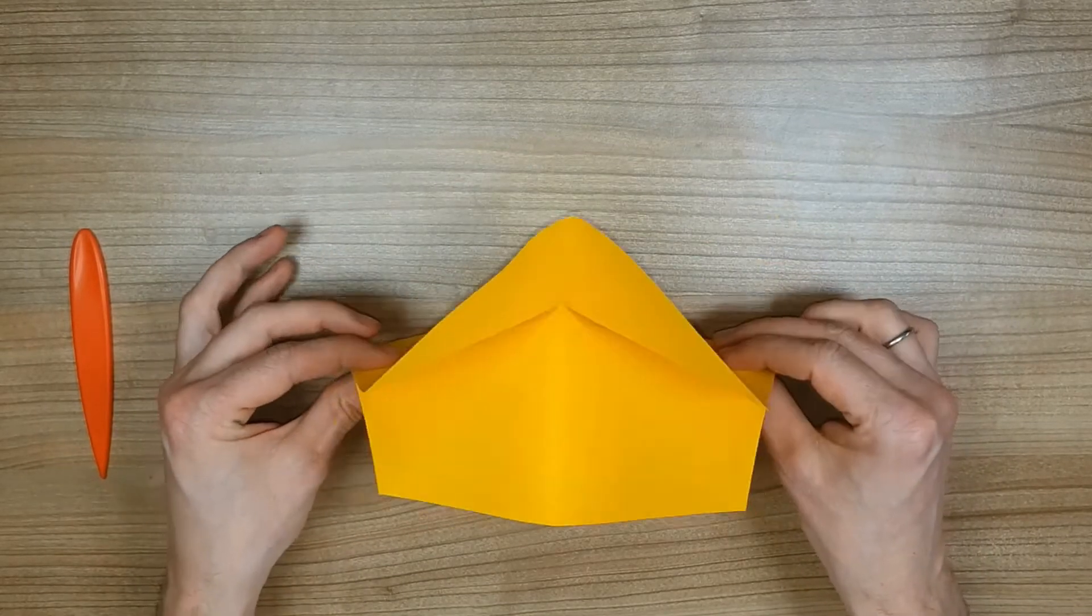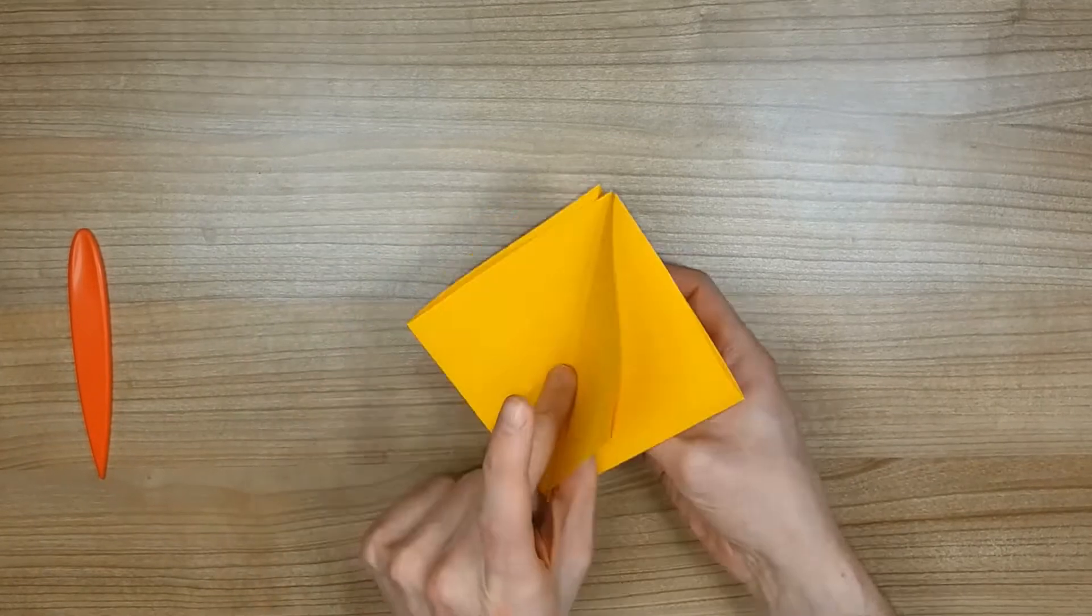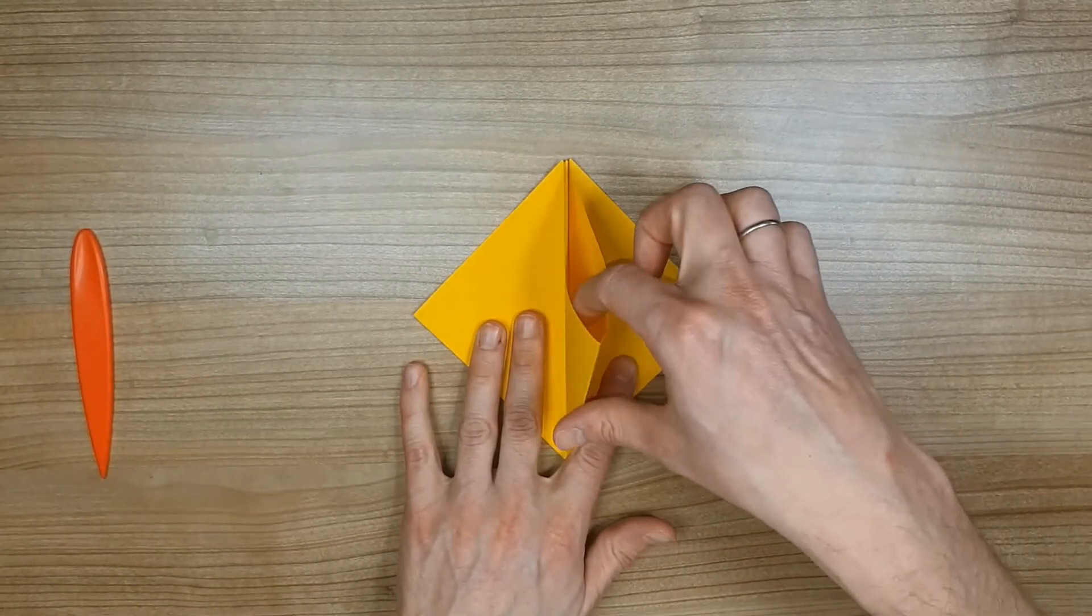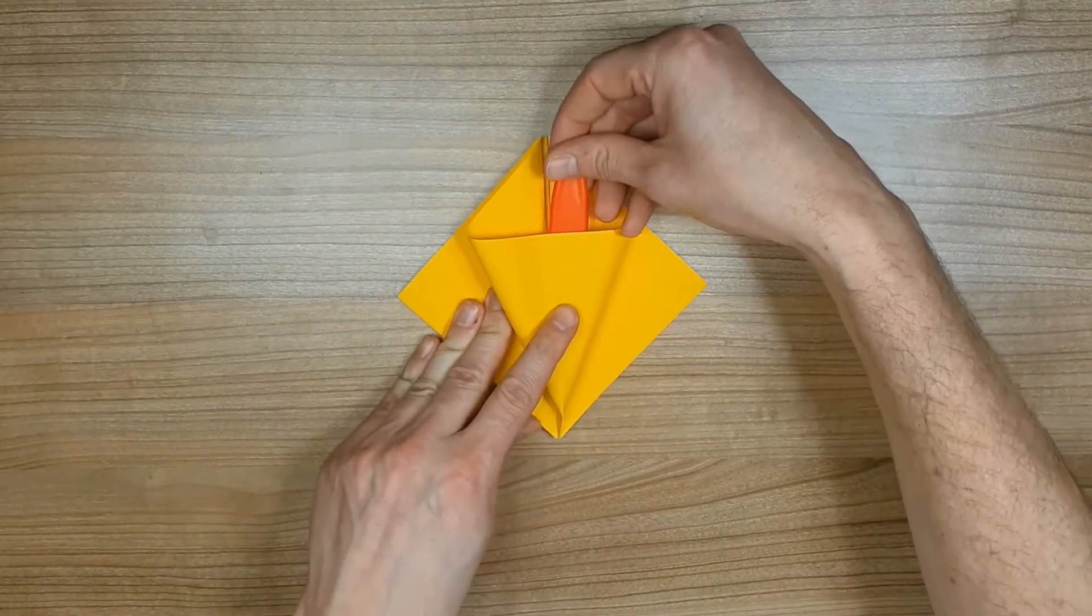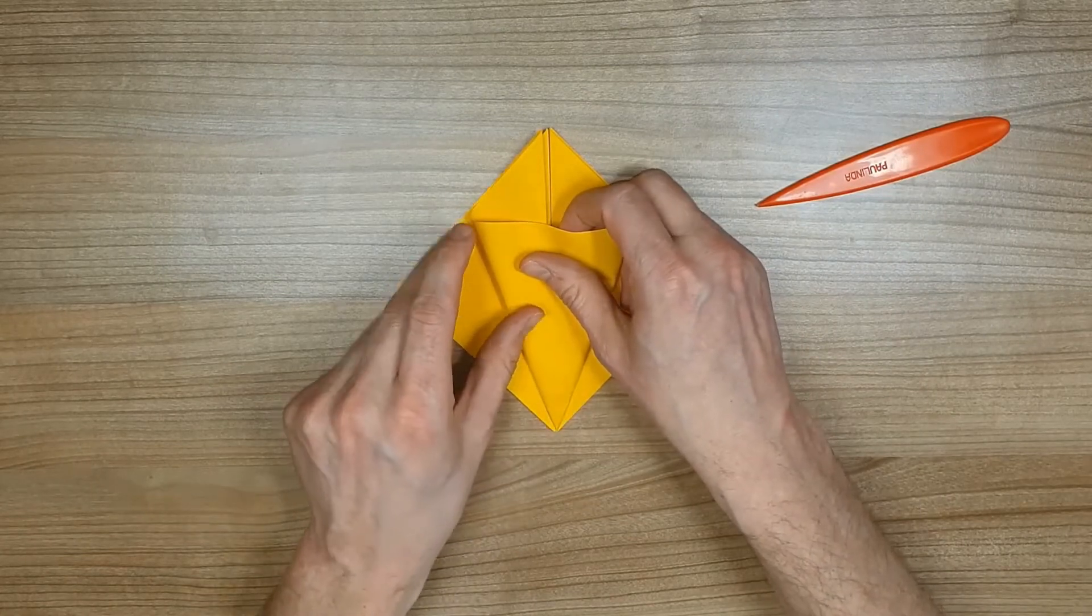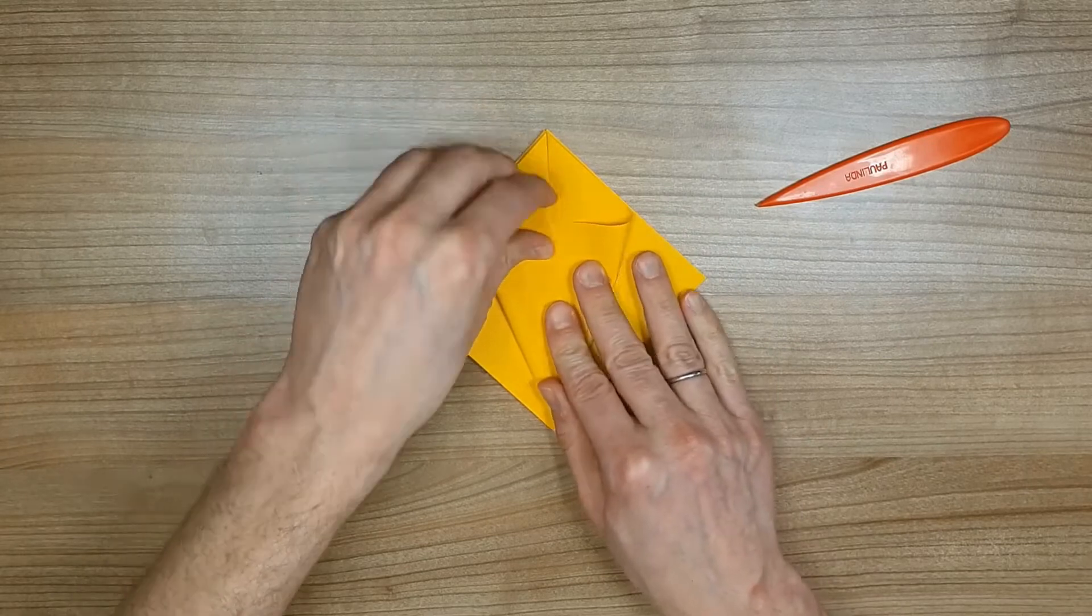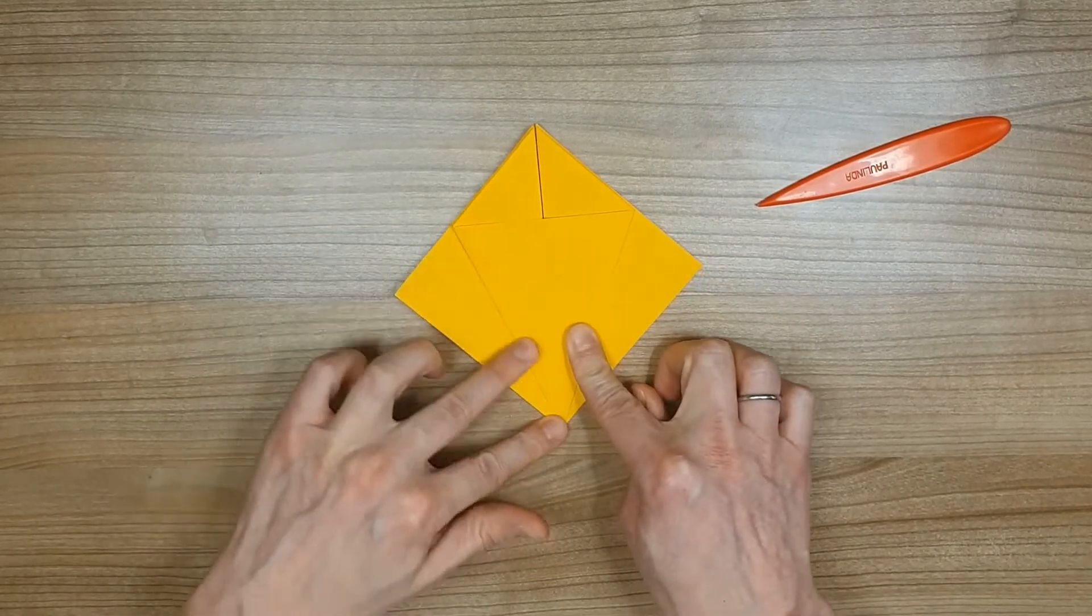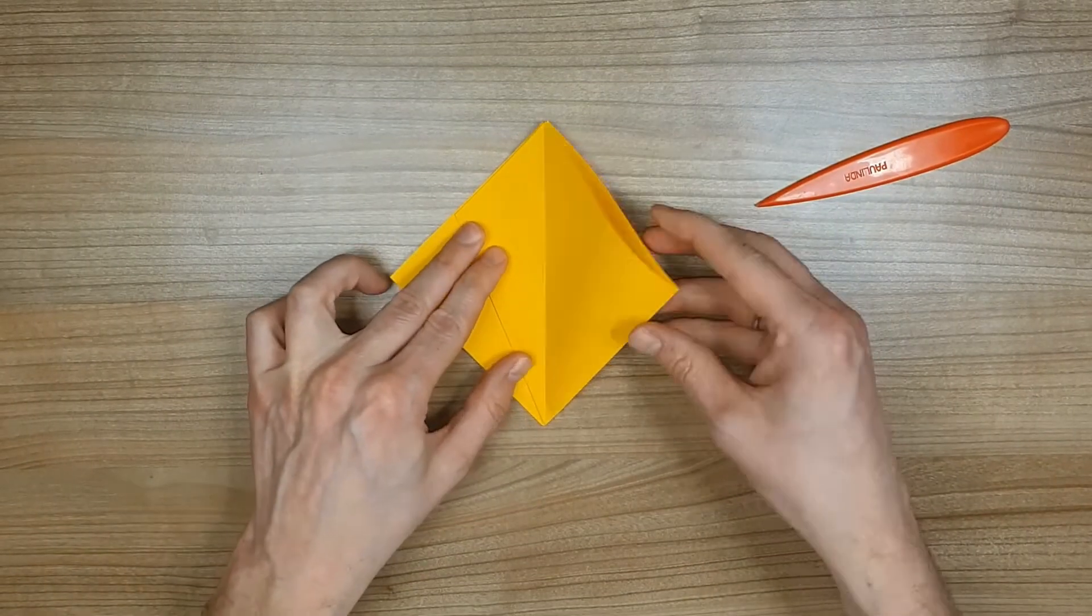Fold the corners together following the creases you made and put the paper down on the table with one side up. Open the inside from the top and then flatten it. You can use a pen to make sure the tip is also folded well. Continue to do this for all the sides.